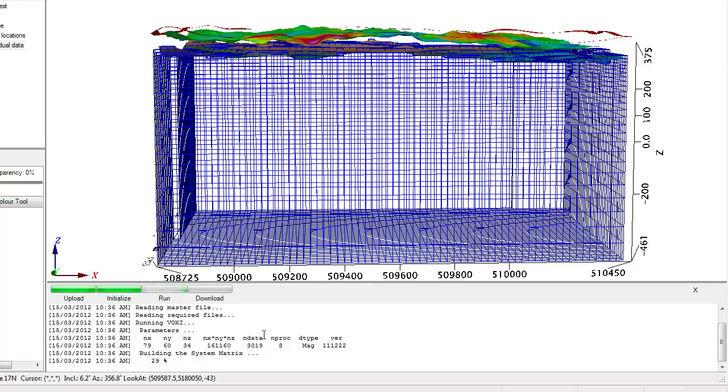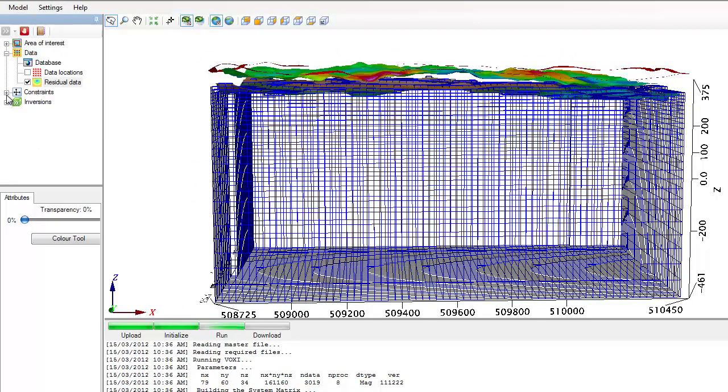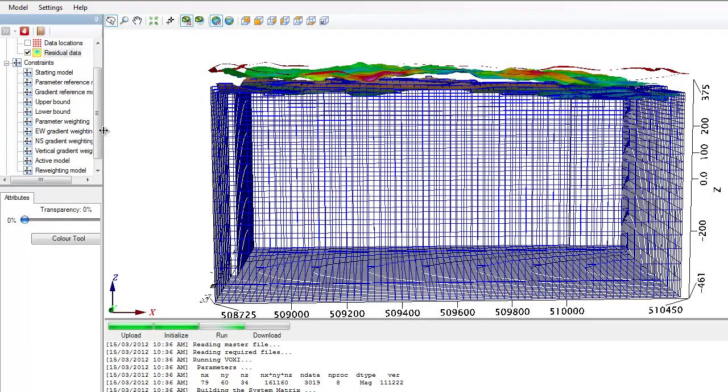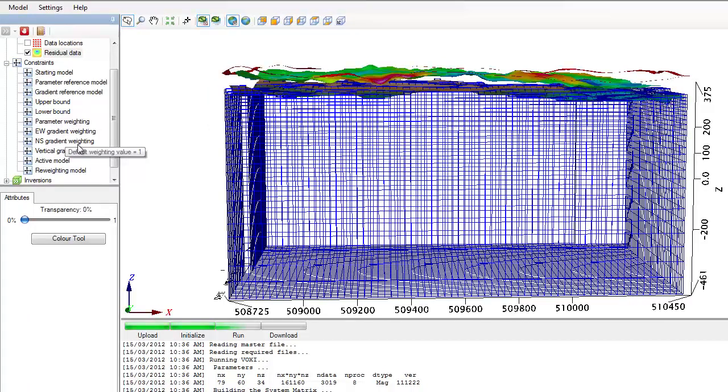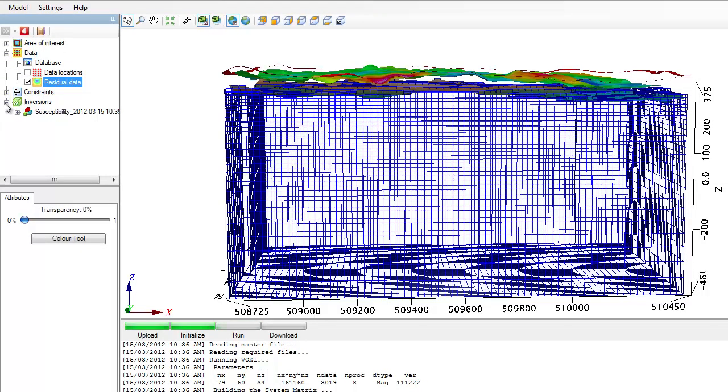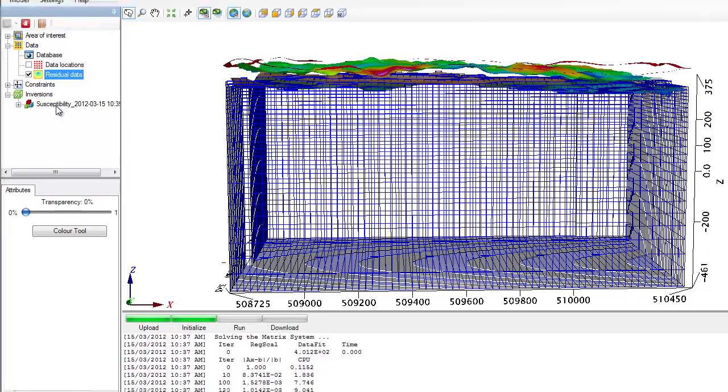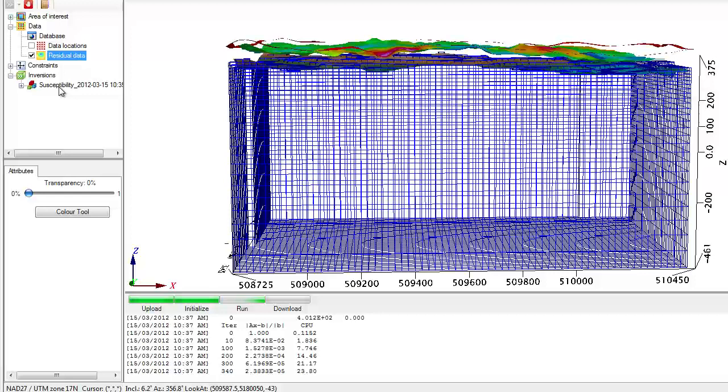While the inversion is going on, I would like to draw your attention to the constrained item on the tree viewer. Would you have a priori knowledge such as thickness of overburden or any knowledge about the contacts? You can enter them as constraints to better control the results of your inversion. The inversion item on the tree appears when we start running an inversion and each inversion session gets a unique name compiled with the type of property that we are modeling along with the timestamp when the inversion was triggered.